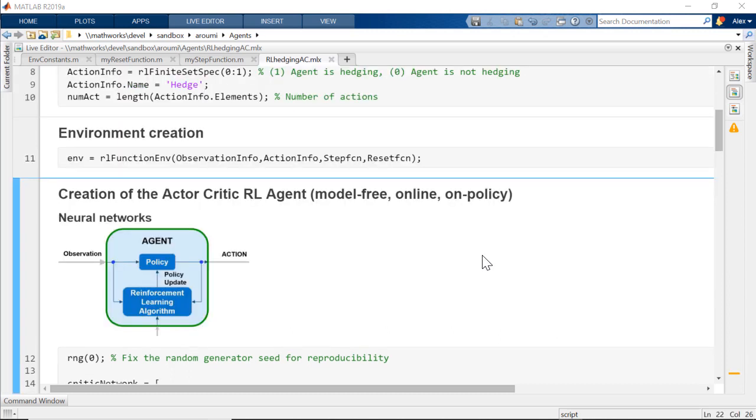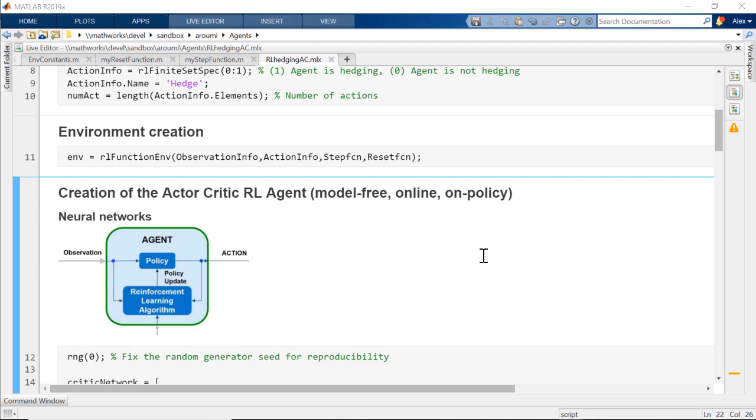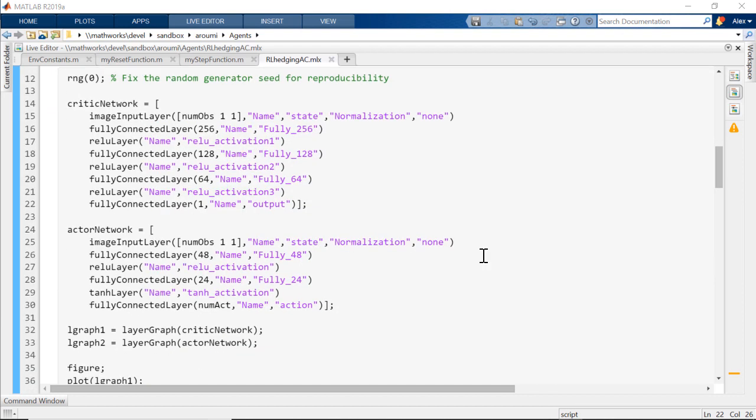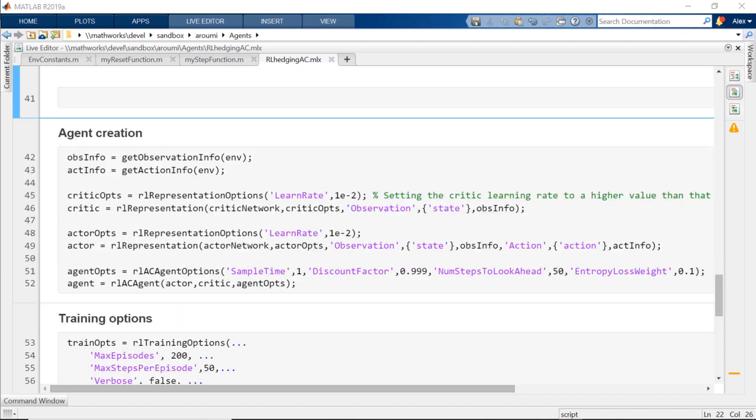The agent consists of a policy and reinforcement learning algorithm. The policy is a mapping function between observations and actions. It can be a neural network designed by specifying the layers, activation functions, and neurons. The reinforcement learning algorithm continuously updates the policy parameters to find an optimal policy that maximizes the cumulative reward.